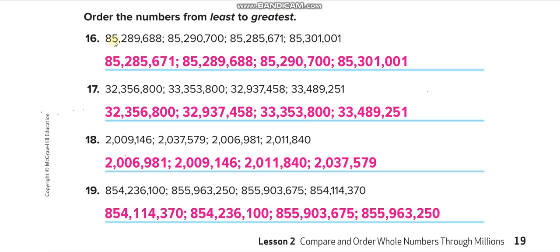Here it is: 85, 85, 85, 85 in the millions period—it is the same. Let's move to the thousands period: 289, 290, 285, and 301. Which one is the least? 301 is the greatest, so it will come at the last. Remaining all are in 200. This is 290, 89, 85, 85. 85 is the least one, it will come first. Then 289, then 290, and then 301. This is how you will solve from least to greatest.